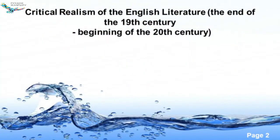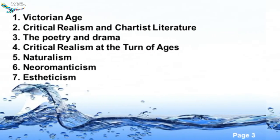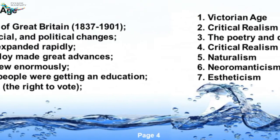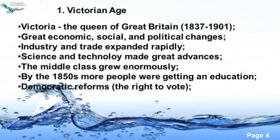The English literature — critical realism of the English literature — and the periodization is the end of the 19th century and the beginning of the 20th century. We have some points: we'll start with the Victorian age, then have some background information on the critical realism, the chartist literature, and gradually we pass with some trends like poetry, drama, then the critical realism at the turn of ages, and the trends of this period: naturalism, neuromanticism, and aestheticism.